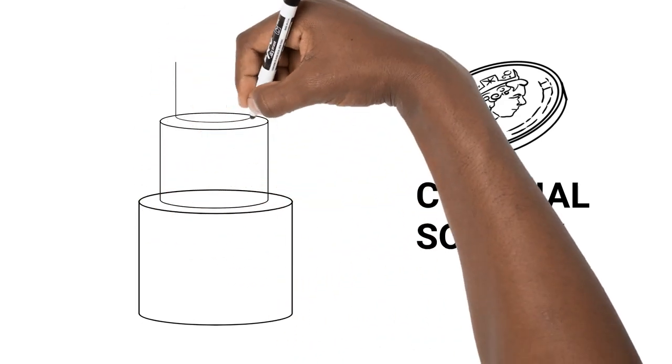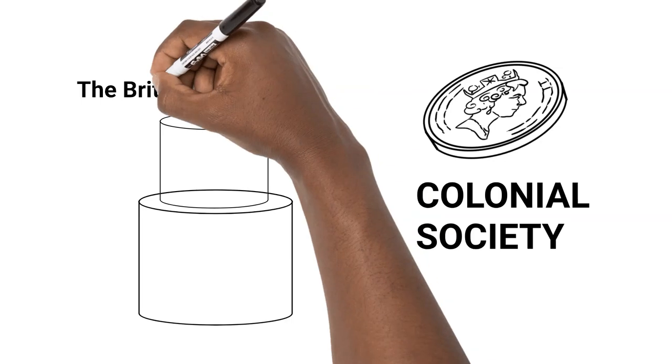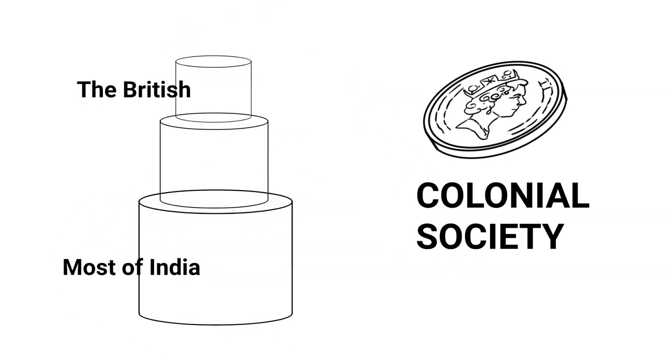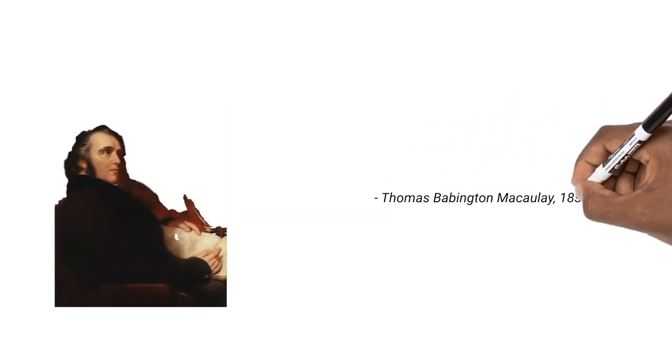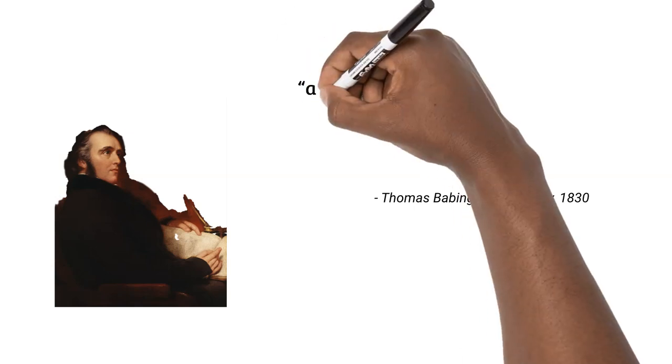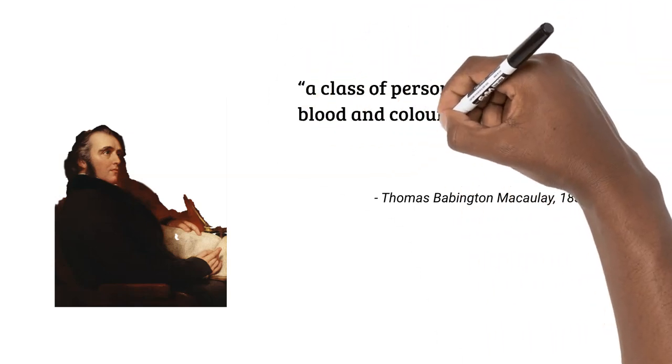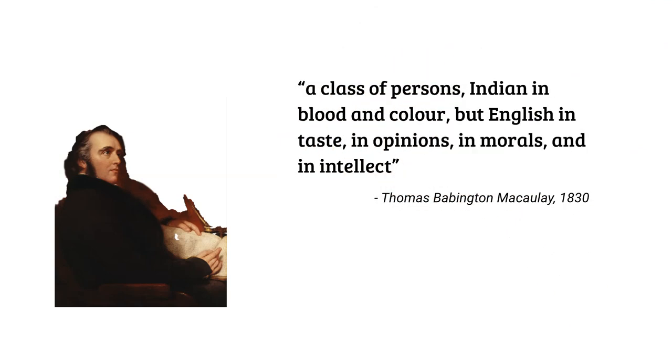A class that existed between the British and Indians. If colonial society had the British on top and the majority of Indians at the bottom, there was a tiny sliver of Indians in the middle who described themselves as the middle class. This group was kind of manufactured by the British to some extent. Thomas Macaulay, the British politician, famously declared that the British government needed to create a class of persons, Indian in blood and color, but English in taste, in opinions, in morals and in intellect. These people could then be employed to run the country and the British could just sit back and oversee them.